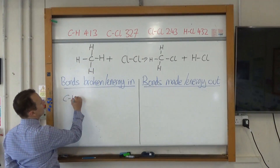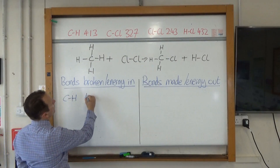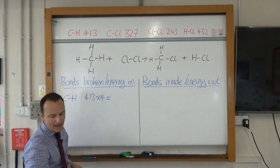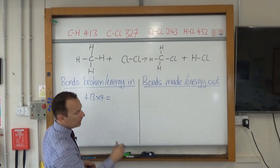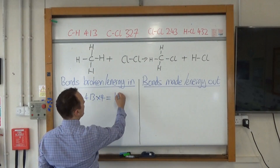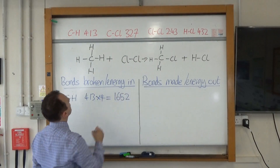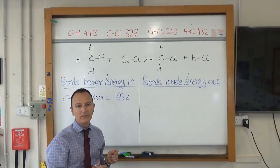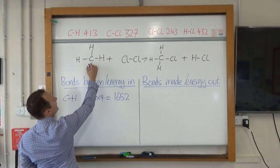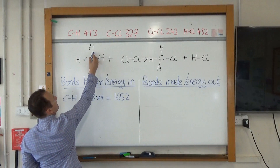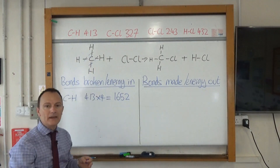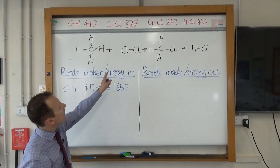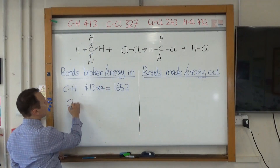A C–H bond is 413, but we've got four of them and that comes out at 1,652. A good tip is: as you consider each of these bonds, cross them off on the equation so you know you've looked at those bonds and you're not going to forget about them. Next one — we've also got a Cl–Cl bond over there.